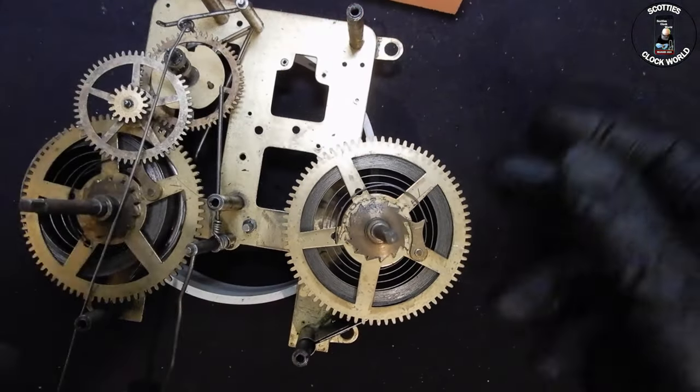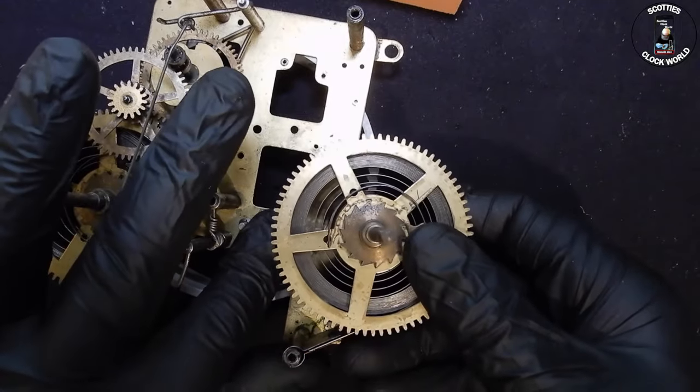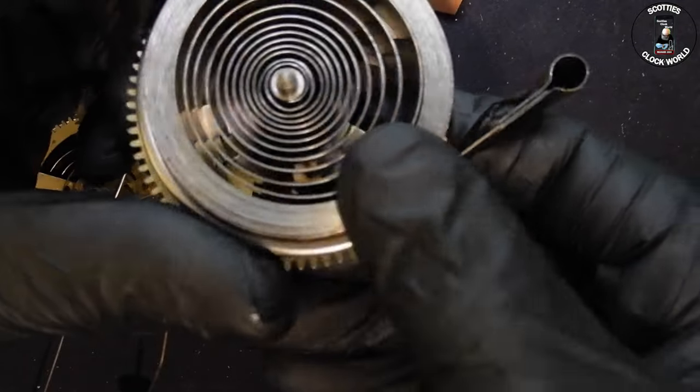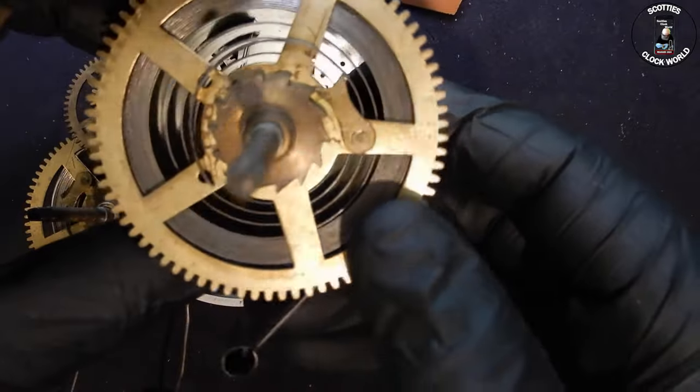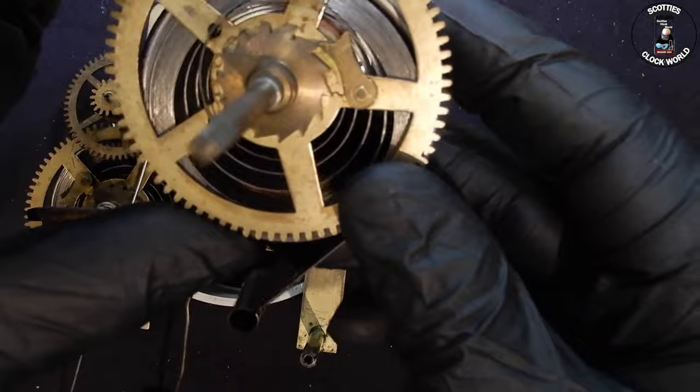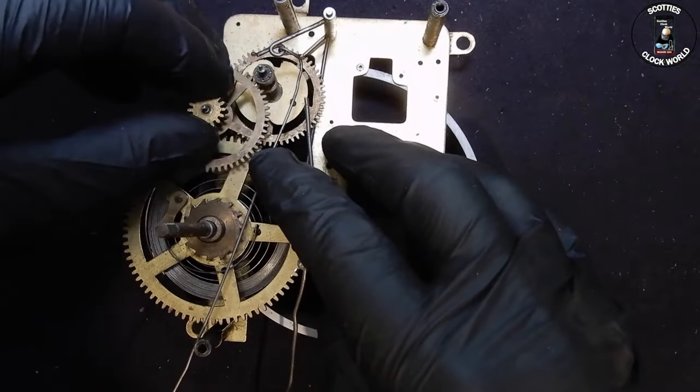And then, we'll take off the going side mainspring, which seems to be in reasonably good condition, but it's very, very dry. So, we'll clean those and grease those later on before we put them back into the movement. Put that one aside. Now, back to the stroke side.